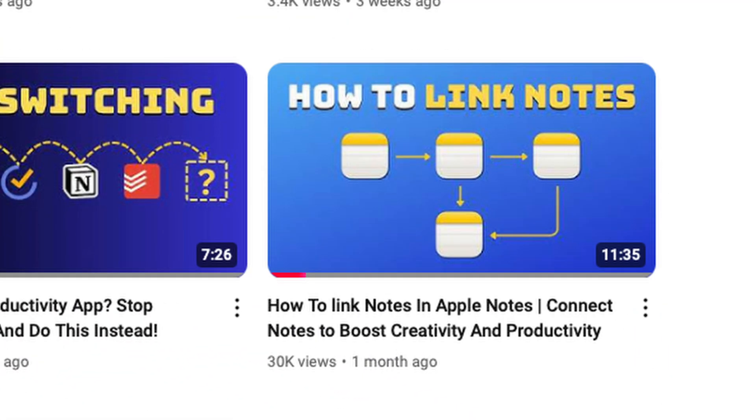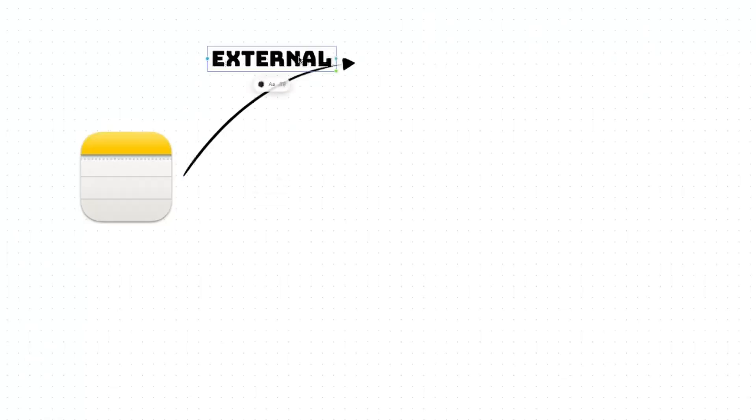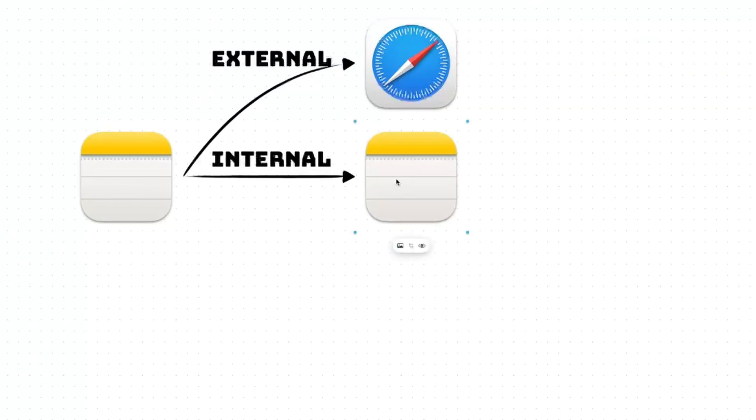We're talking about links and I've covered this on a few occasions on my channel already because they are extremely powerful. But broadly speaking there are three types of links that you can add to your Apple Notes: external links, internal links, and app links.